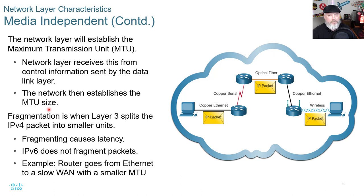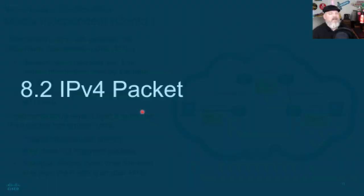Fragmentation is when Layer 3 splits a V4 packet into smaller units, and fragmenting causes latency. V6 does not fragment packets. For example, when a router goes from Ethernet to a slow WAN link with a smaller MTU, it will fragment a V4 packet, but will not do so with V6.